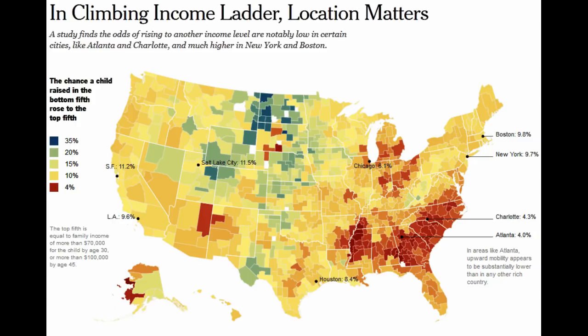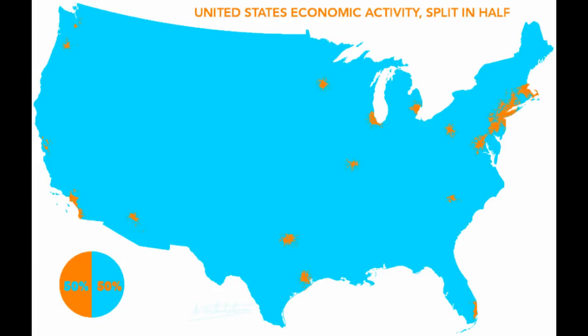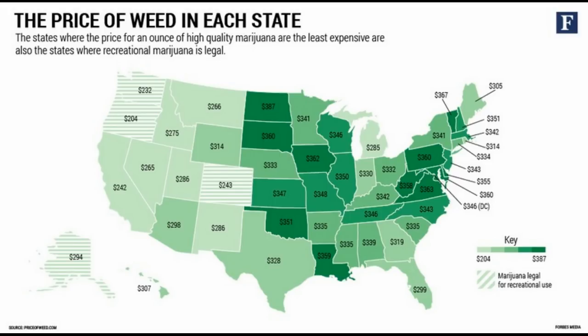How possible is it to climb the income ladder? The counties with blue and green show that up to 35% of people ranked in the bottom fifth when they were born rose out of it. If you're in the South, good luck getting out of poverty. This is how economic activity is broken down — the orange is 50% of the economic activity, and the blue is the other 50%. And no map would be complete without mentioning weed — price of an ounce of weed in each state. Where it's legalized it's cheaper, but not really that much cheaper. I can attest that $341 in New York is not for good stuff.